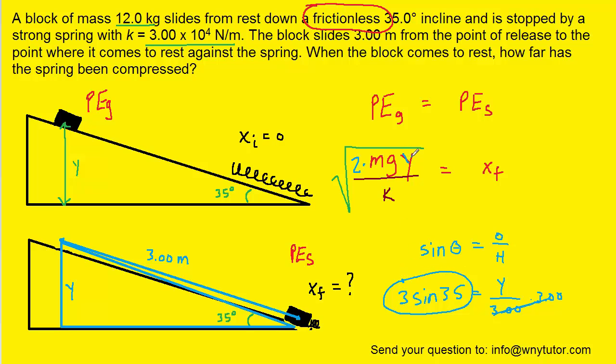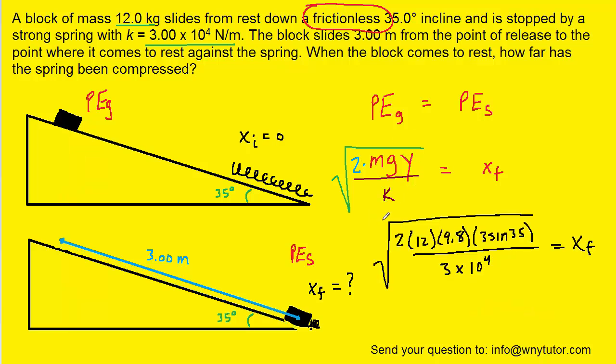With that in mind, we can plug in all the known values. And when you crunch this large square root on your calculator, you should get approximately 0.116 meters for xf, and that will represent the amount by which the spring was compressed.